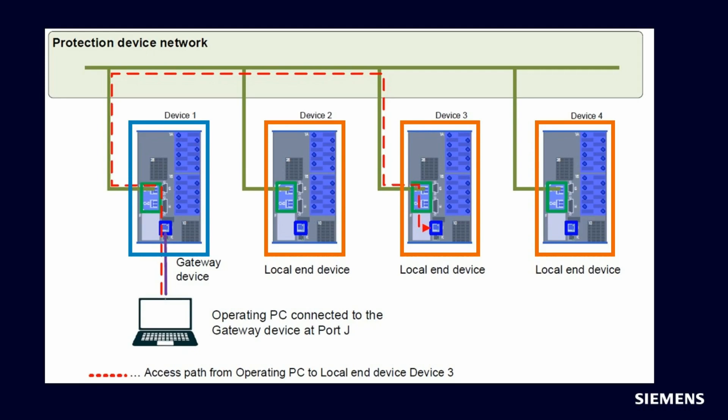DIGSI 5, or the browser-based web UI, can be used on the operating PC to access the gateway device itself and all local end devices. Here, the access path from the operating PC via port J of the gateway device to a local end device can be seen.